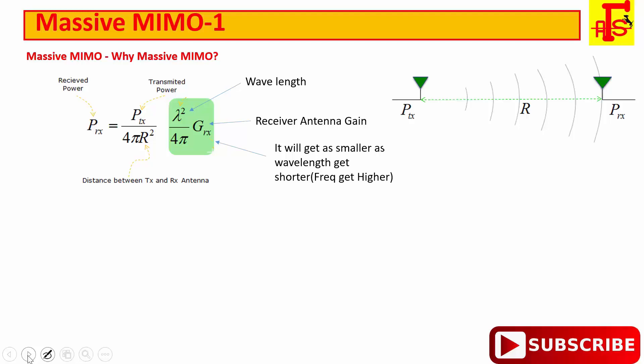In example, if we assume antenna gain doesn't change and frequency get increased by 2 times, that means wavelength will also decrease by 2 times. Lambda now become lambda by 2. That means receiving power will decrease by 4 times.